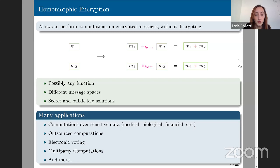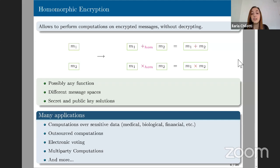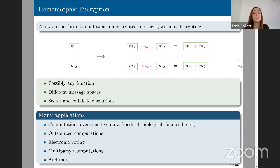Why is homomorphic encryption interesting in practice? Mainly because of the large number of applications it enables. Think about any application involving sensitive data — homomorphic encryption can potentially help. Every time you treat medical, biological, or genomic data, you can do operations in a secure way. More generally, you can do any kind of outsourced computation: a client sends data to a server, and the server can perform operations without knowing which messages it's treating. Other applications include electronic voting and multi-party computation.